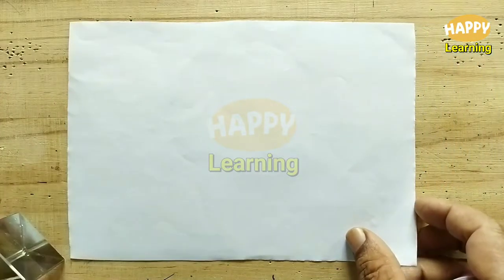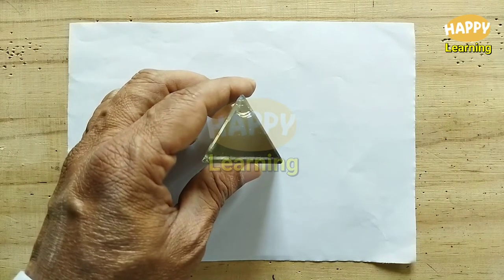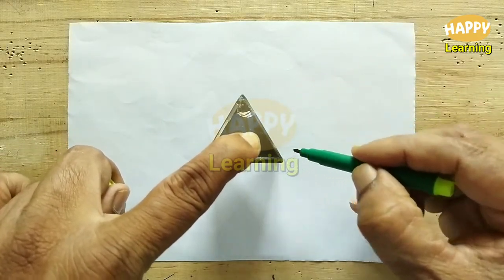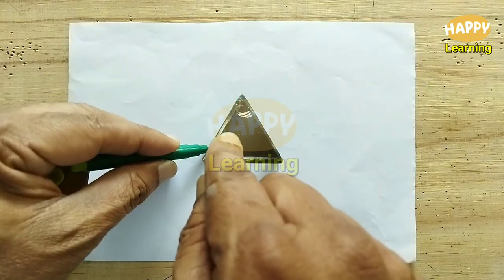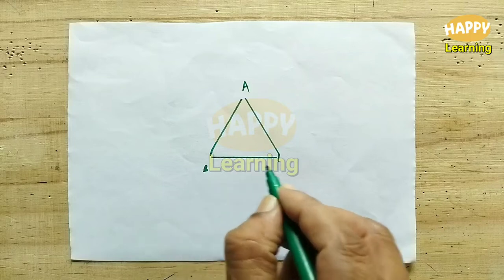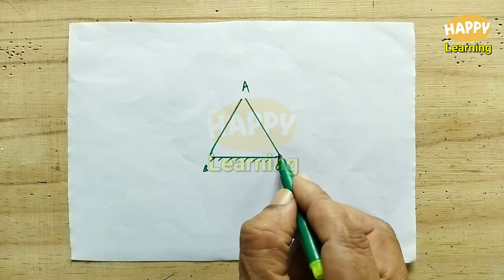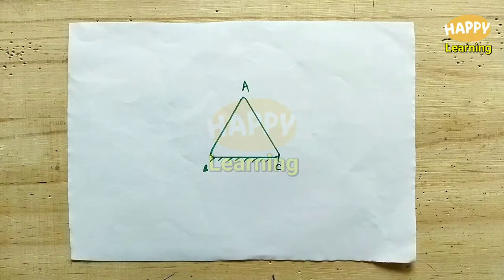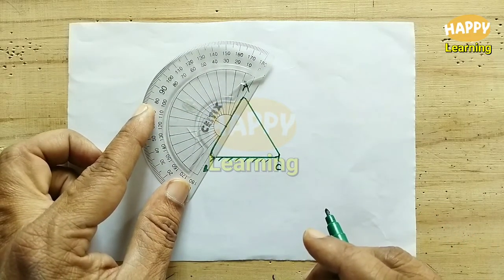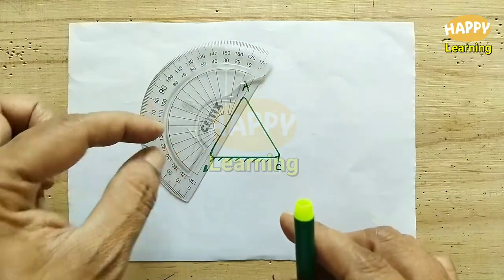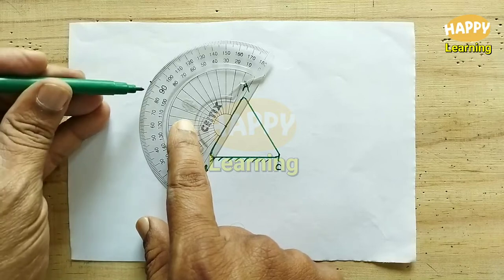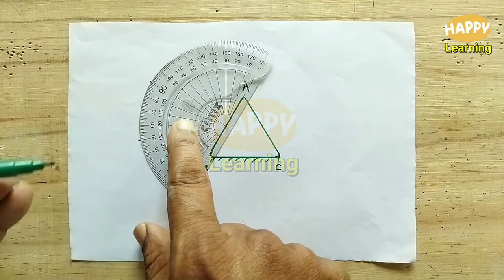Take another paper and repeat the same process. Put the prism at the center of the paper and draw the outline of the glass prism. Note down the three corners A, B, C — BC will be the base of the prism. AB is the first refracting surface. Select one point almost at the center of AB. Using a protractor, draw the normal by putting a dot at 90 degrees, then count the angle: 10, 20, 30, 40 degrees — at 40 degrees put a dot.